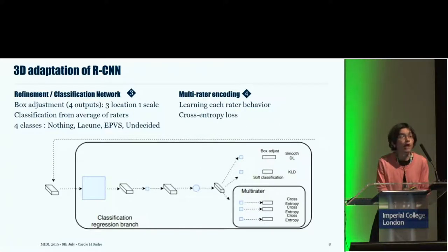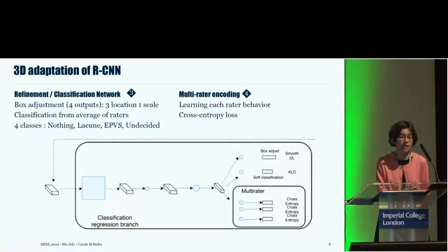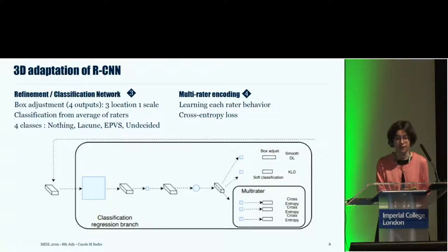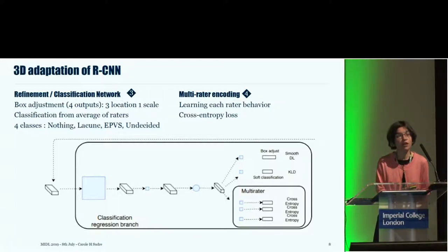For the refinement stage, given the proposal boxes, we adjust the center of mass location and scale, and classify based on the average of our different raters' labels into four classes: nothing, lacune, EPVS, or an undecided class between lacune and EPVS. For the multi-rater encoding, we allow each box to be classified according to each individual rater's choice, in order to reproduce rater behavior.